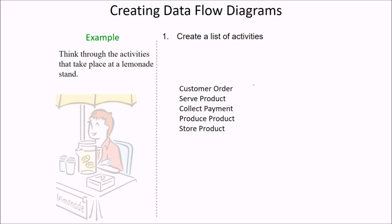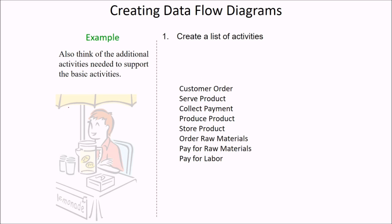Now we create a list of activities. First: customer order comes, the product will be served, payment will be collected, the product will be produced, and storage of the product will be done. We also think of additional activities needed to support the basic activities: customer order, serve product, collect payment, produce product, store product. We also have to order raw materials to make the lemonade, pay for the materials, and if labor is involved, pay for the labor.